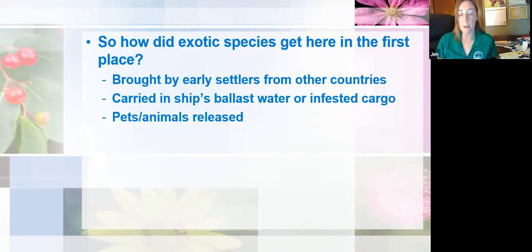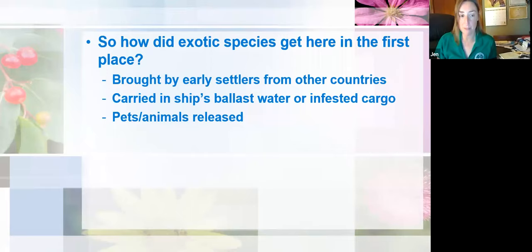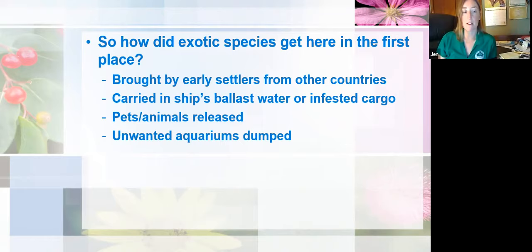When people have certain exotic pets — especially things like snakes, turtles, lizards — a lot of times when they're done with them or they get too big, they release them into the natural environment. That causes trouble not just because the animal itself is exotic and potentially causing issues for native plants and animals, but also because they often carry all kinds of bacteria or other diseases easily transmitted to our native species. Also, people dump their aquariums when they don't want them anymore, and aquatic creatures, plants, or seeds could enter waterways and infest areas that way.